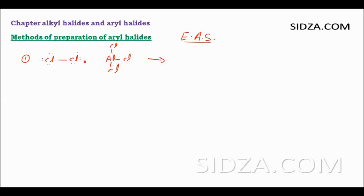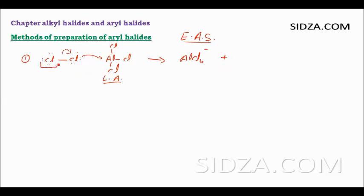Cl2 reacts with AlCl3, which is a Lewis acid — an electron pair acceptor. The Cl2 molecule has electron pairs available, so it acts as a Lewis base and forms a coordinate bond with aluminium. This bond then breaks with both electrons going to one chlorine, giving AlCl4- and Cl+. We have now generated the electrophile.